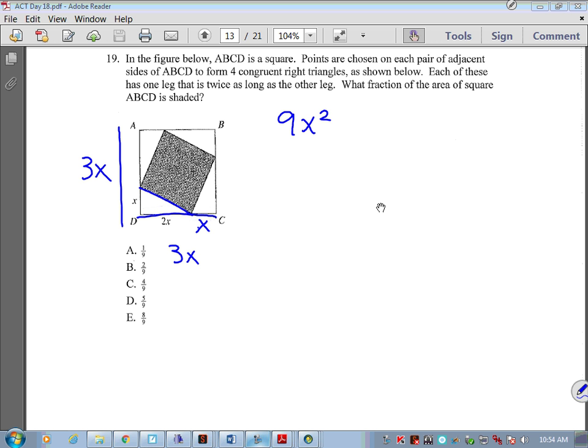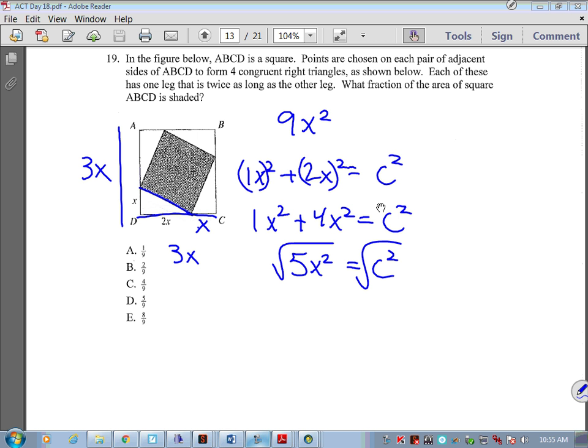Now, in order to find the area of this, I really just need to find that length of that hypotenuse. So that is essentially 1x squared plus 2x squared equals c squared. Well, 1x squared is really 1x squared plus 2x squared is really 4x squared equals c squared. So I'm getting 5x squared equals c squared. So I would square root that, and I'm going to get square root of 5x squared.